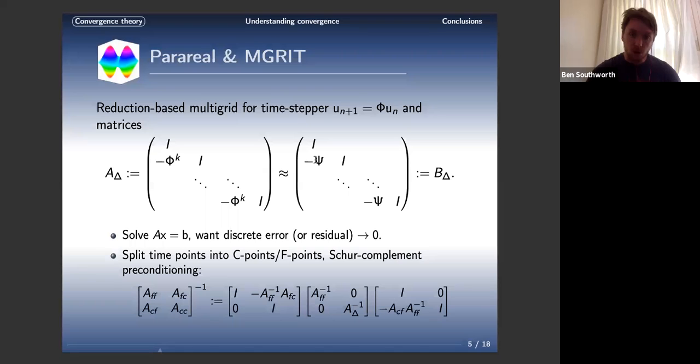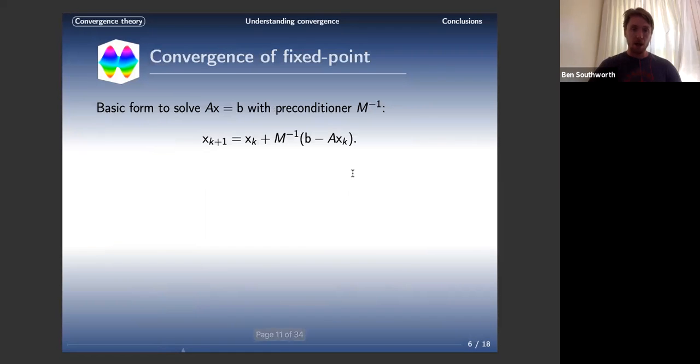So we approximate it with some coarse-grid operator C that approximates K-stepping on the fine-grid, and we call this approximation B-delta. This is how we approximate our Schur complement. This is a fixed-point iteration, so we're trying to solve Ax equals B with a preconditioner. This is what a standard fixed-point iteration looks like. Your new solution is your old one plus M-inverse times the residual.